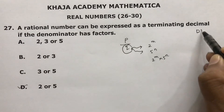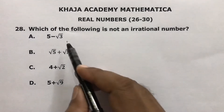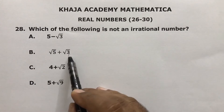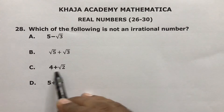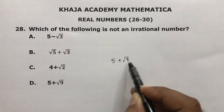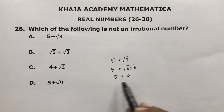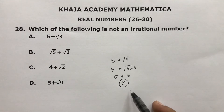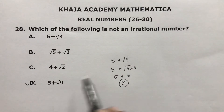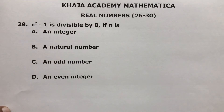Which of the following is not an irrational number? Option A has root 3, which is irrational. Another option has root 5 and root 3, both irrational. Another has 4 and root 2, where root 2 is irrational. But 5 plus root 9 equals 5 plus 3, which is 8 — and 8 is rational. So the correct option is D, because it is rational.